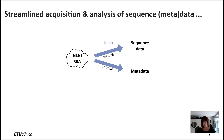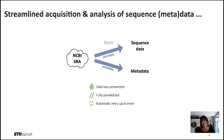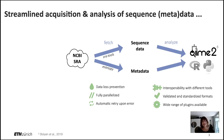The main functionality of Q2 Fondue is that it allows the user to fetch sequence data and associated metadata from NCBI's Sequencing Read Archive. We have implemented this in a fully optimized manner such that during the fetching of the data, no data loss occurs. Also, the data fetch uses all available computational cores and is fully parallelized. If errors occur, Q2 Fondue is configured such that it automatically retries downloading the data. And if the multiple retries still fail, the error messages are displayed to the user in a transparent fashion.